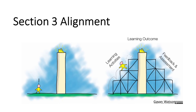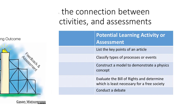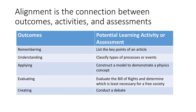Section 3 is about alignment. Alignment is the connection between learning outcomes, instructional activities, and assessments. An aligned course means that the learning outcomes, instructional activities, and assessments match up so students learn what you intend them to learn and you accurately assess what students are learning.